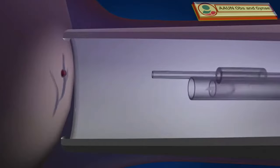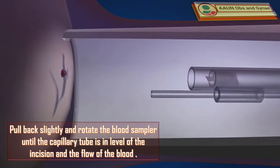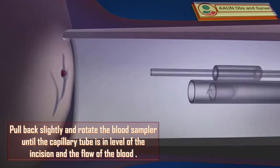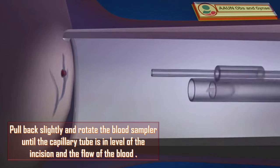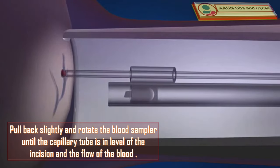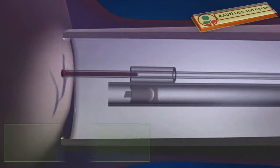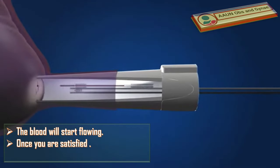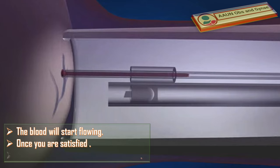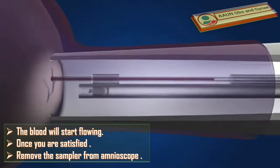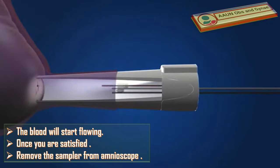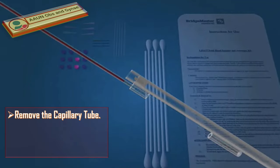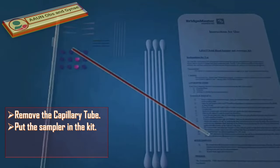Pull back slightly and rotate the blood sampler until the capillary tube is at the level of the incision and the flow of blood begins. The blood will start flowing into the capillary tube. Once you are satisfied that you have an adequate blood sample, remove the sampler from the amnioscope and remove the capillary tube.